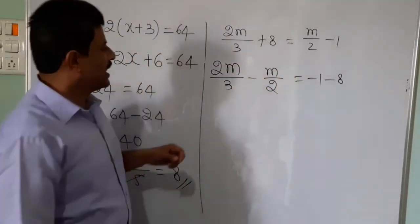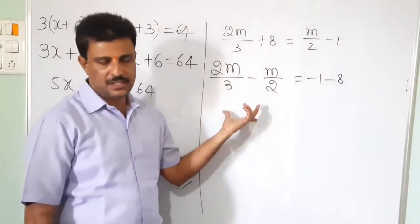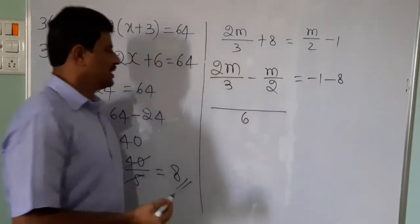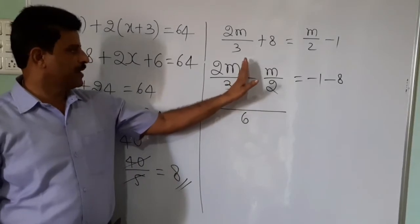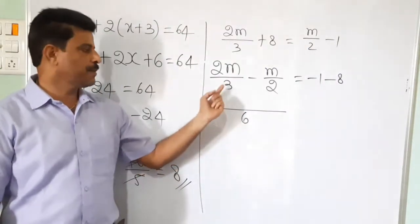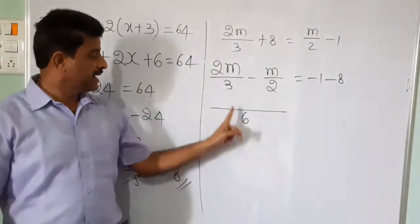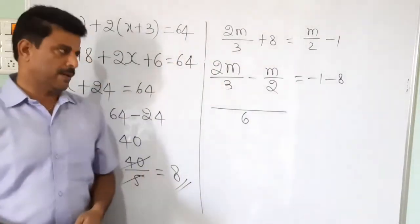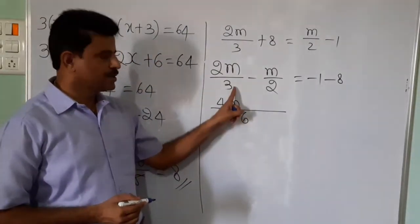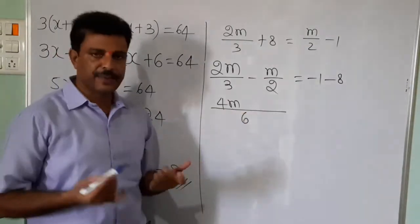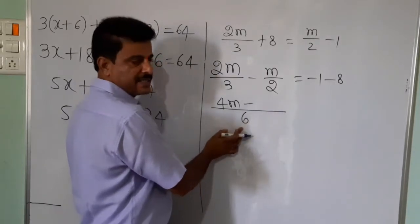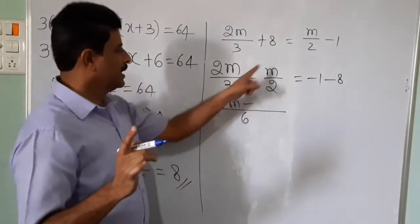Now simplify 2m by 3 minus m by 2. Take the LCM — which is the multiplication of the denominators: 3 times 2 equals 6. LCM is 6. For the first term, LCM divided by denominator: 6 divided by 3 equals 2, multiply by numerator 2m gives 4m. For the second term: 6 divided by 2 equals 3, multiply by m gives 3m.